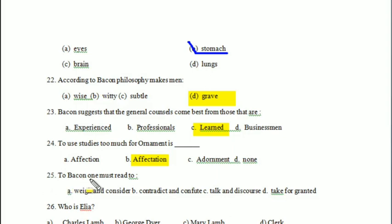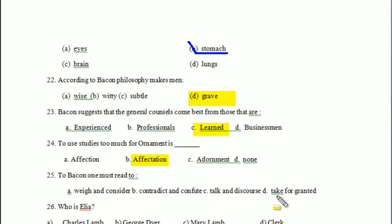According to Bacon, one must read to — weigh and consider, contradict and confuse, talk and discuss, or take for granted? Your answer is 'weigh and consider.'